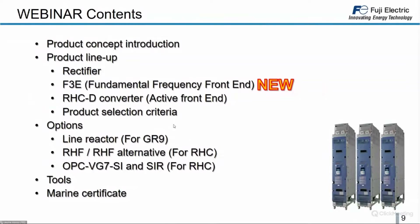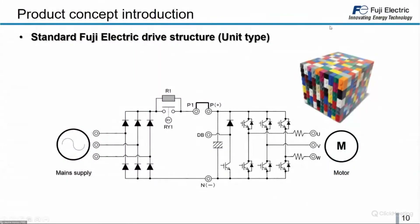For the product introduction, we will see: the RHD rectifier; F3, which is a variation called fundamental frequency front end — a kind of low-cost active front end; and the RHC, the real active front end. Then product selection criteria, options for the GR9 rectifier and active front end RHC, the selection tools, and finally a brief explanation about the marine certificate for this family.